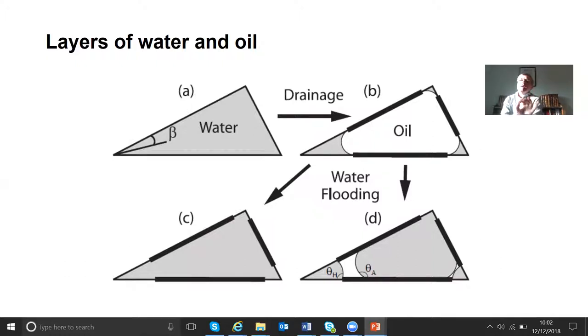Part D is more interesting because what can happen is the water is now the non-wetting phase. It doesn't like the surface, so it moves into the center of the pores. The oil likes the surface, clings to the surface, and forms an oil layer. The interesting thing here is the water in the corners is bulging out with this hinging angle, but it can't move across the oily surface because it's now oil-wet.